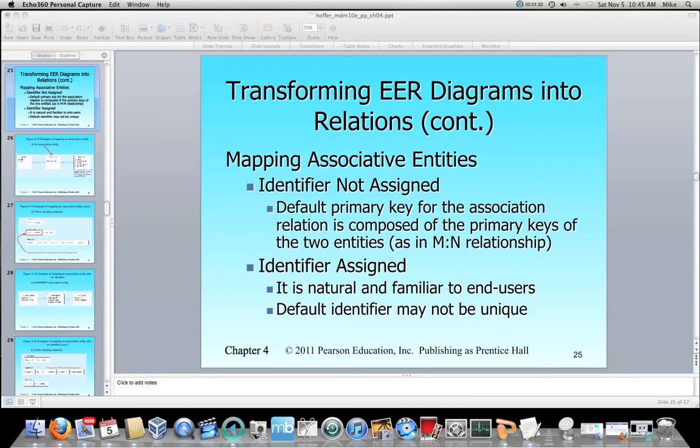Or we set up an identifier that is not associated with the two primary keys. And again it may not be unique, and that's why really for our purposes we're going to be using the composite primary key made up of the foreign keys from the parent entities. So let's take a look at how we do that.